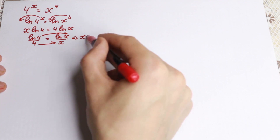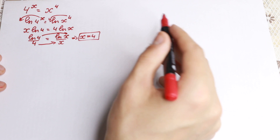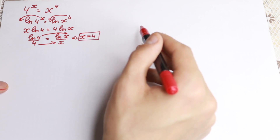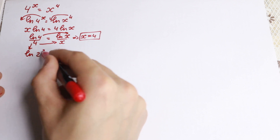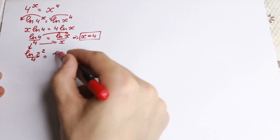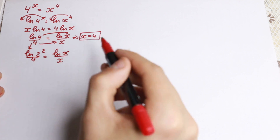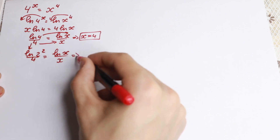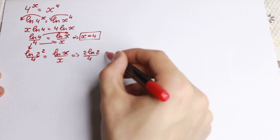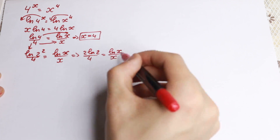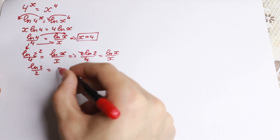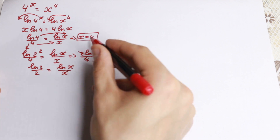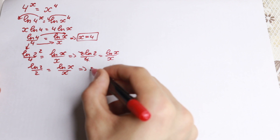But this is not all solutions. We need to find more. Take a look closely: I want to rewrite ln(4) as ln(2²). So we have 2·ln(2)/4 = ln(x)/x, which simplifies to ln(2)/2 = ln(x)/x. It's the same situation as before, so from here x equals 2 is our second solution.